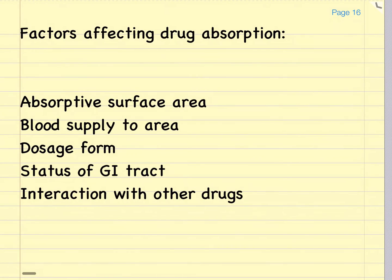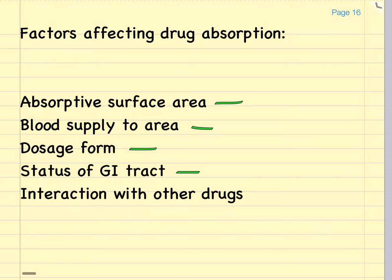You've already seen how drugs may be absorbed across the cell membranes, and how the solubility of the drug, its ionization status, and the pH of the solution can change drug absorption. There are other factors that can affect drug absorption, including the quality of the absorptive surface area, how well the blood supply is to that area, what the dosage form of the drug is, the status of the GI tract if it happens to be an oral drug, and interaction with other drugs.